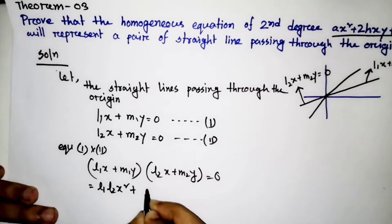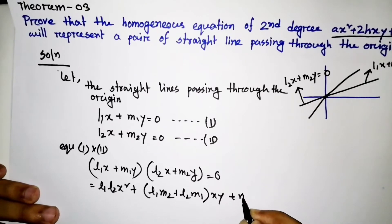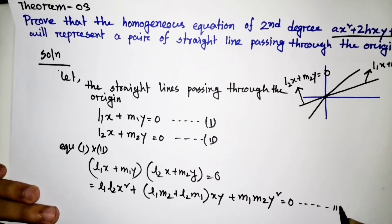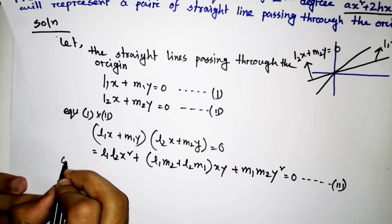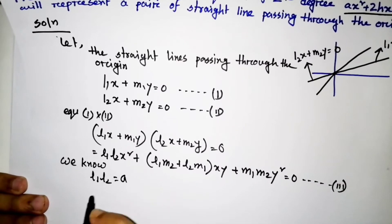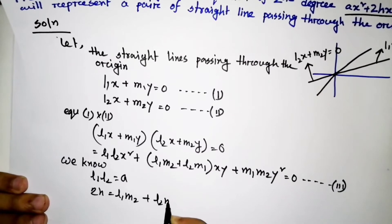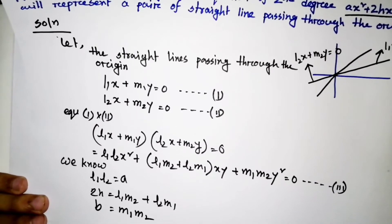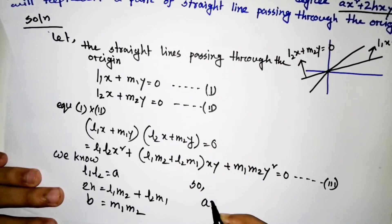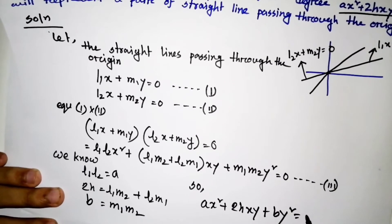Expanding the product of the two lines: l₁x · (l₂x + m₂y) + m₁y · (l₂x + m₂y) gives l₁l₂x² + (l₁m₂ + l₂m₁)xy + m₁m₂y² = 0, which matches the form ax² + 2hxy + by² = 0.